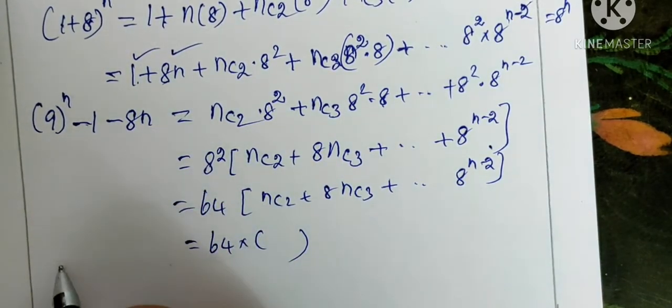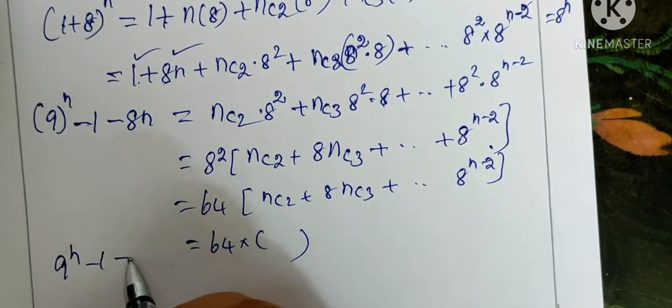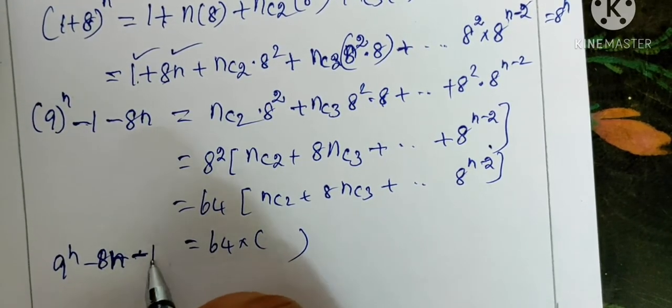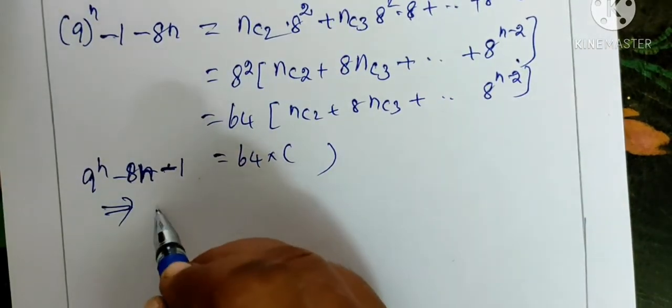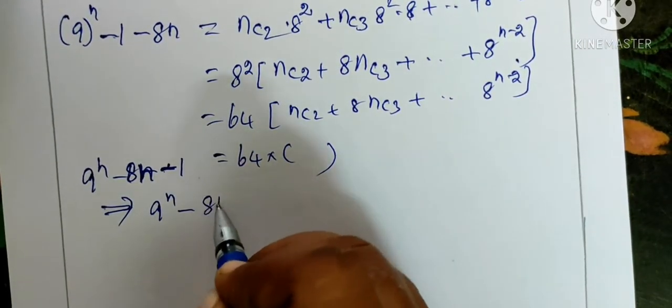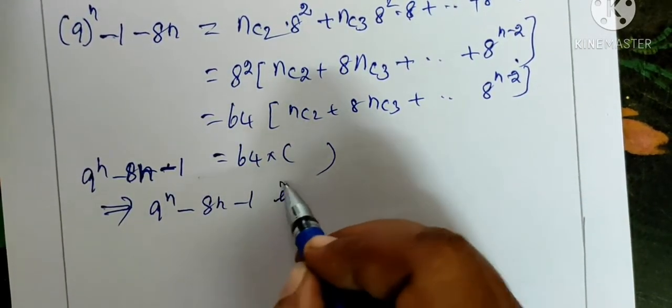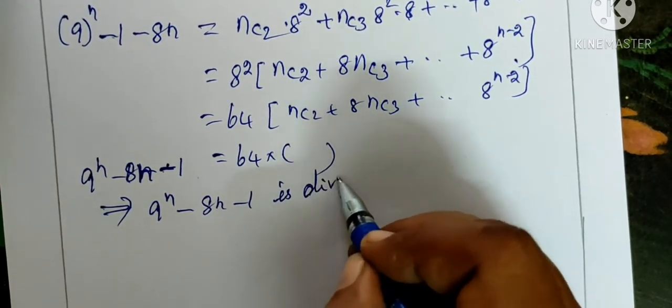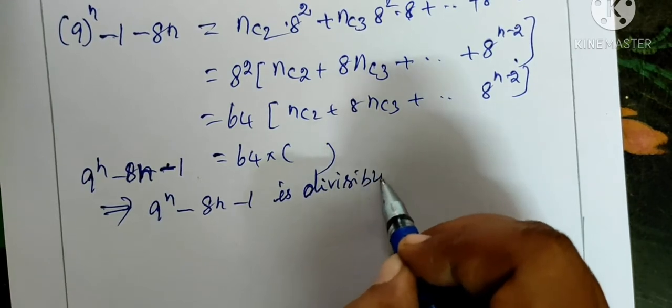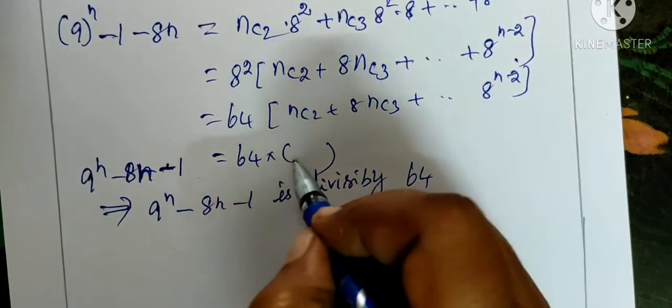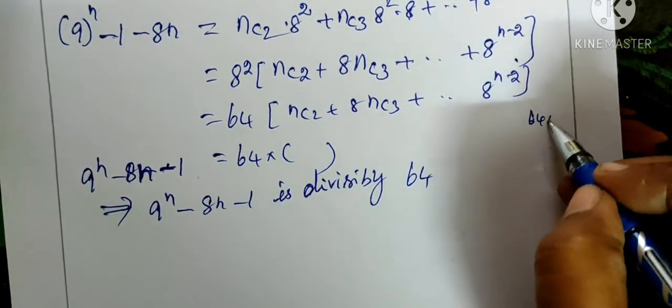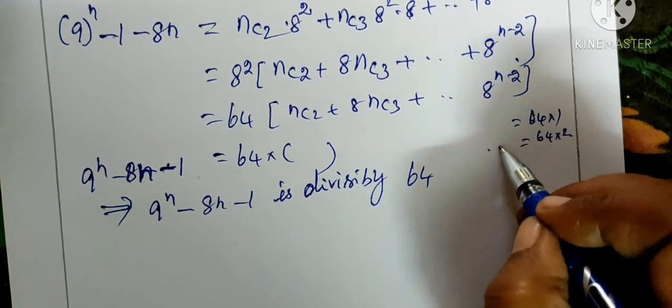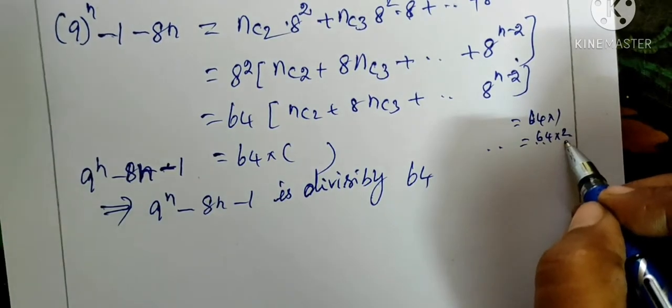So it is 64 times something. This expression is clear. This is 64 divided by 64. So which implies 9 power n minus 8n minus 1 is divisible by 64.